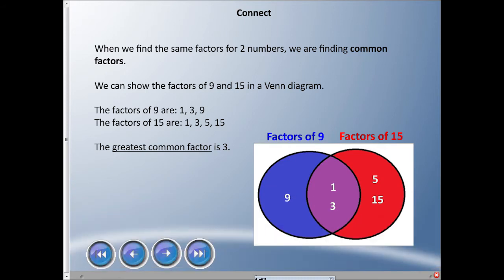The factors of 15 are 1, 3, 5, and 15. Here's my little Venn diagram, and you can see that the greatest common factor is 3. When I say greatest, I'm talking about the largest. On this side here we have the factors of 9, and on this side here we have the factors of 15.